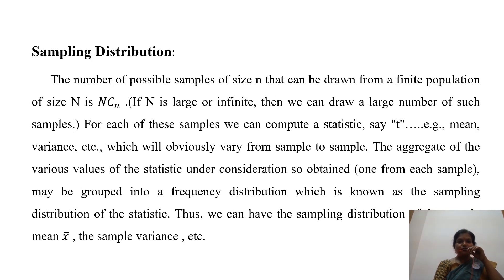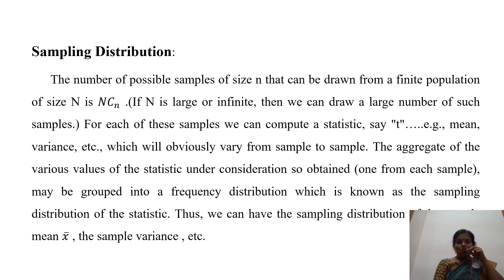Sampling distributions. The number of possible samples of size n that can be drawn from a finite population of size N is NCn. If n is large, we can draw a large number of samples. For each of these samples we can compute a statistic, say t — for example, mean, variance, etc. — which will obviously vary from sample to sample. The aggregate of the various values of the statistic under consideration, obtained from the samples, may be grouped into a frequency distribution which is known as the sampling distribution of the statistic. Thus we can have the sampling distributions of the mean x-bar and the sample variance, etc.